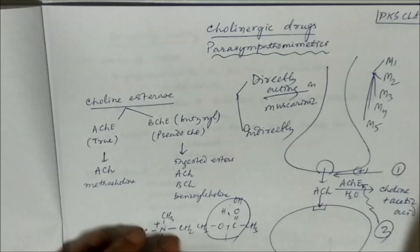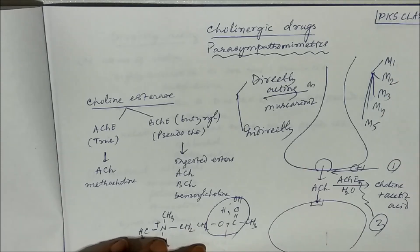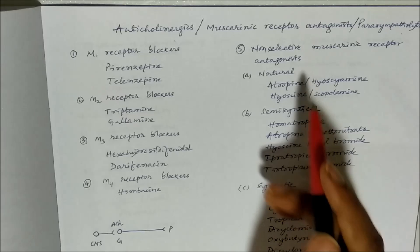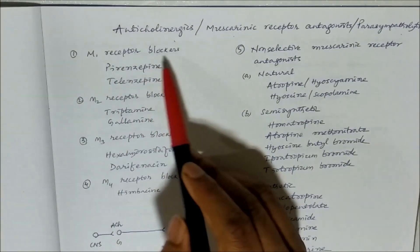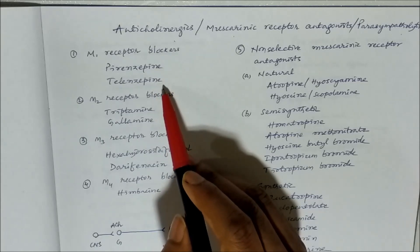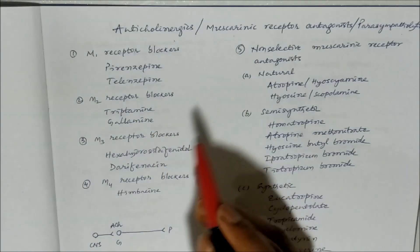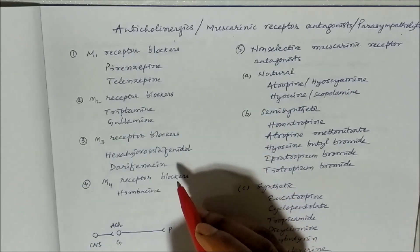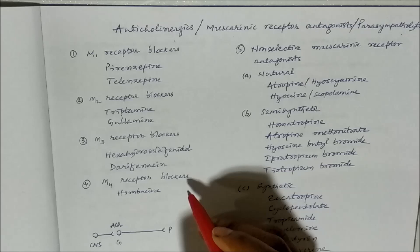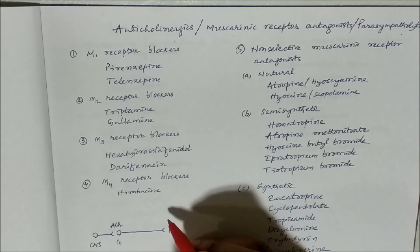As already discussed previously, we have five types of muscarinic receptors: M1, M2, M3, M4, M5. The blockers of all those receptors can be used as Anticholinergics. M1 receptor blocker like pirenzepine, telenzepine; M2 receptor blocker: tripitramine, gallamine; M3 receptor blocker: hexahydrosiladifenidol, darifenacin; M4 receptor blocker: himbacine; and we don't have M5 receptor blocker till date.